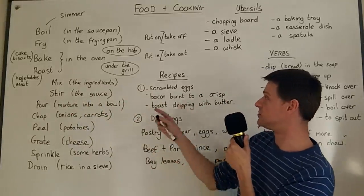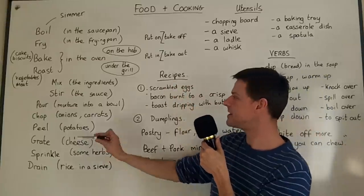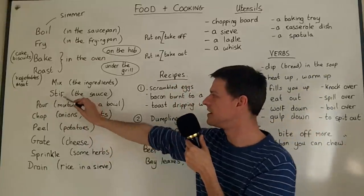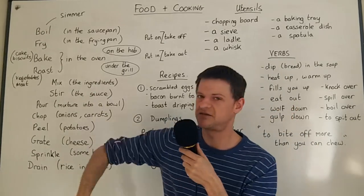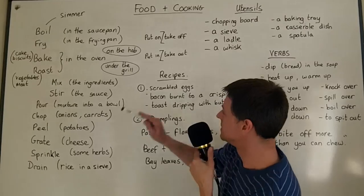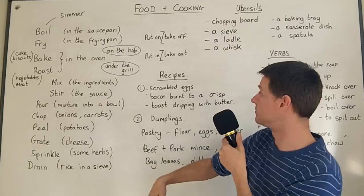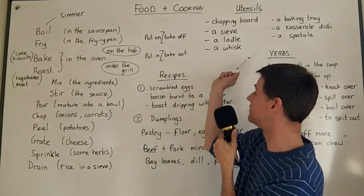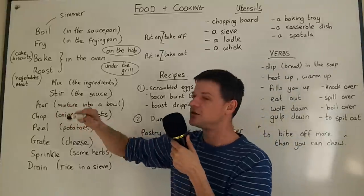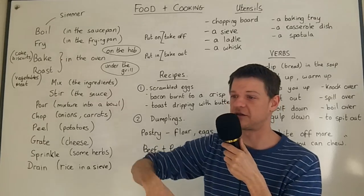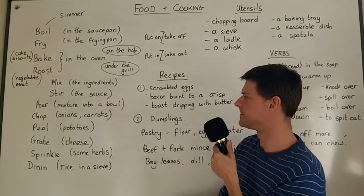You can mix the ingredients together — remember, ingredients is the list of different foods you need for a recipe. You also stir. Stir is less vigorous than mix. For mixing you normally use a whisk — certainly for pancakes you use a whisk to mix the egg and flour together. But if you're stirring something, you do it slowly, like stirring sugar into a cup of tea.